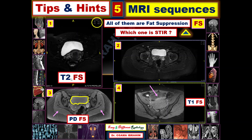If there is no time of inversion TI, only three parameters written in the corner, then this represents T2 fat suppression — T2 because water appears bright, and fat suppression because fat is suppressed. However, if you look closely at the other image's parameters, you can find at least four parameters: TR, TE, and TI. TI representing time of inversion means it is an inversion recovery sequence like STIR or FLAIR. So the answer is number two — that is the STIR image.